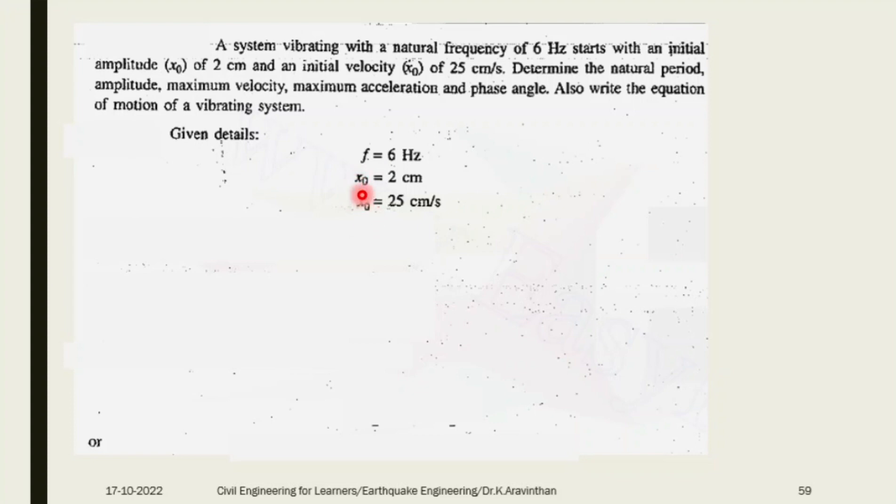Let us find the first parameter called natural period T. The formula is T equals 1 by f. You have frequency 1 by 6, you will be getting the time period.